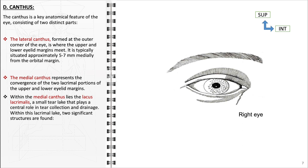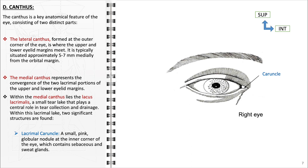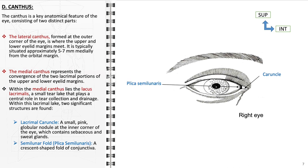Two notable structures are found within the lacus lacrimalis. First, the lacrimal caruncle: a small, pink, globular nodule located at the inner corner of the eye, composed of sebaceous and sweat glands and sometimes containing hair follicles and accessory lacrimal tissue. Its primary function is to contribute to the tear film that protects and lubricates the eye. Second, the plica semilunaris, a crescent-shaped fold of conjunctiva that is essential for the smooth horizontal movement of the eye, allowing for the expansion and contraction of the conjunctival sac.